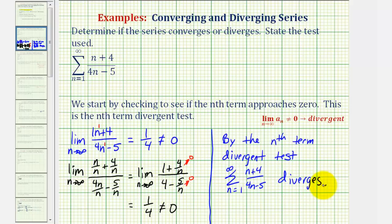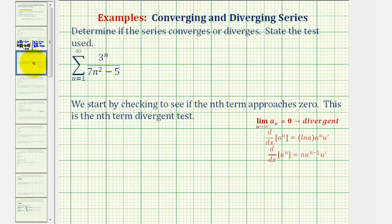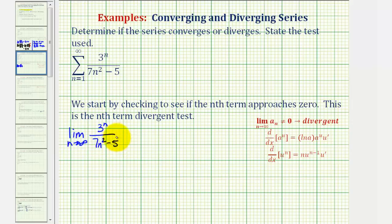Let's take a look at a second example. Again, the question is the same, so again we'll start by checking to determine if the nth term approaches zero. So we want to find the limit as n approaches infinity of a sub n, which is three to the power of n divided by seven n squared minus five. Now in this case, notice as n approaches infinity, both the numerator and the denominator approach infinity, which is an indeterminate form, so to help us find this limit, we can apply L'Hôpital's rule, which means this limit is equal to the limit of the derivative of the numerator divided by the derivative of the denominator.